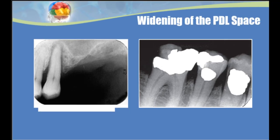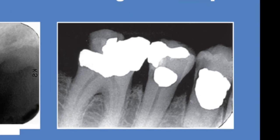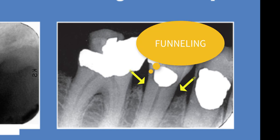In a second picture, we can see widening of the PDL space caused by bone resorption on either the mesial or distal of the intercrestal bone. This is what we call funneling.